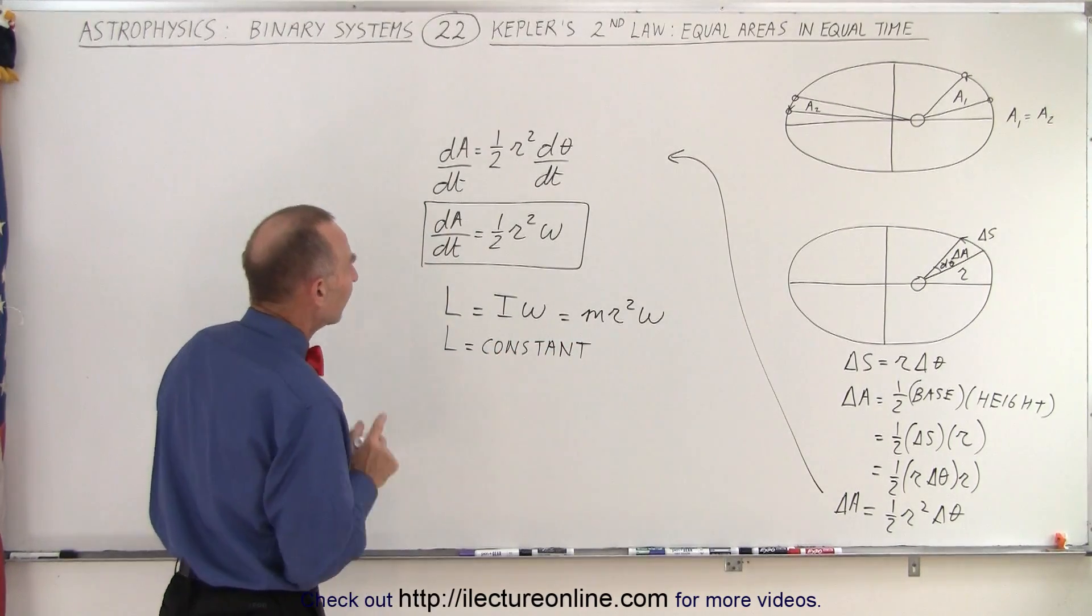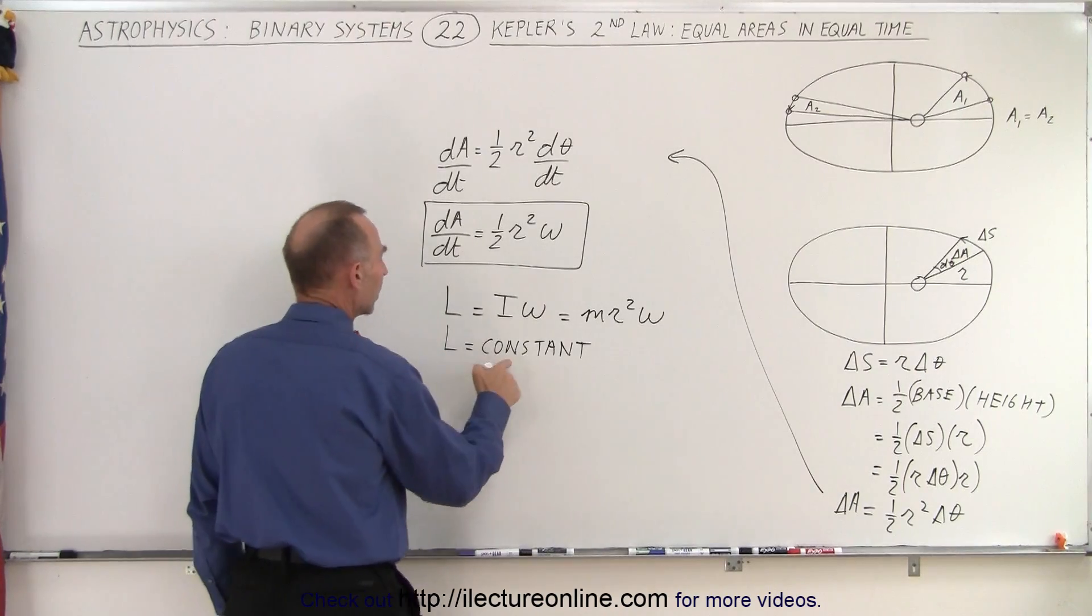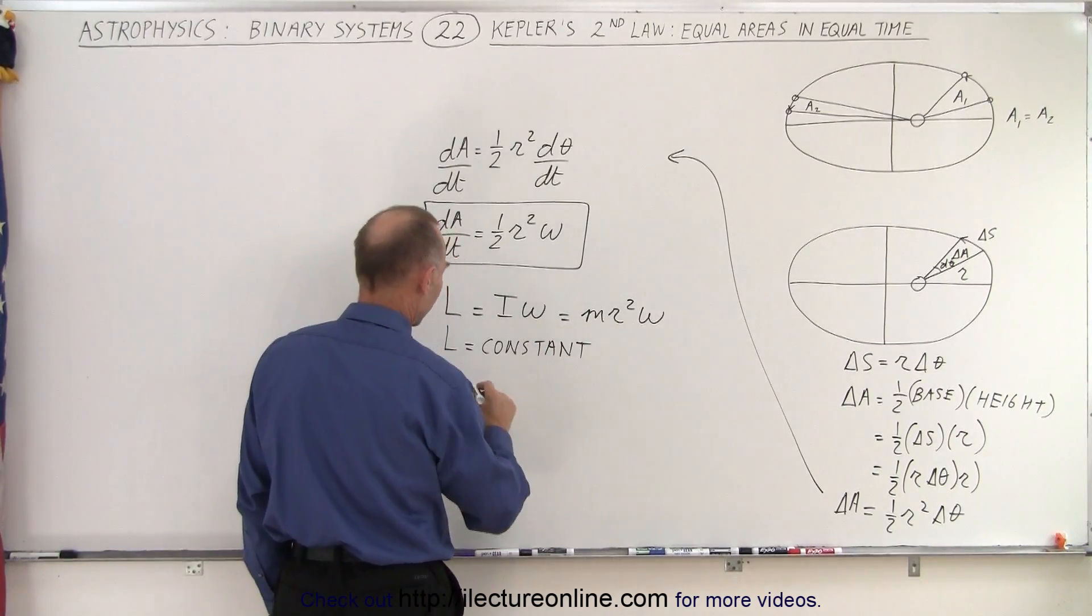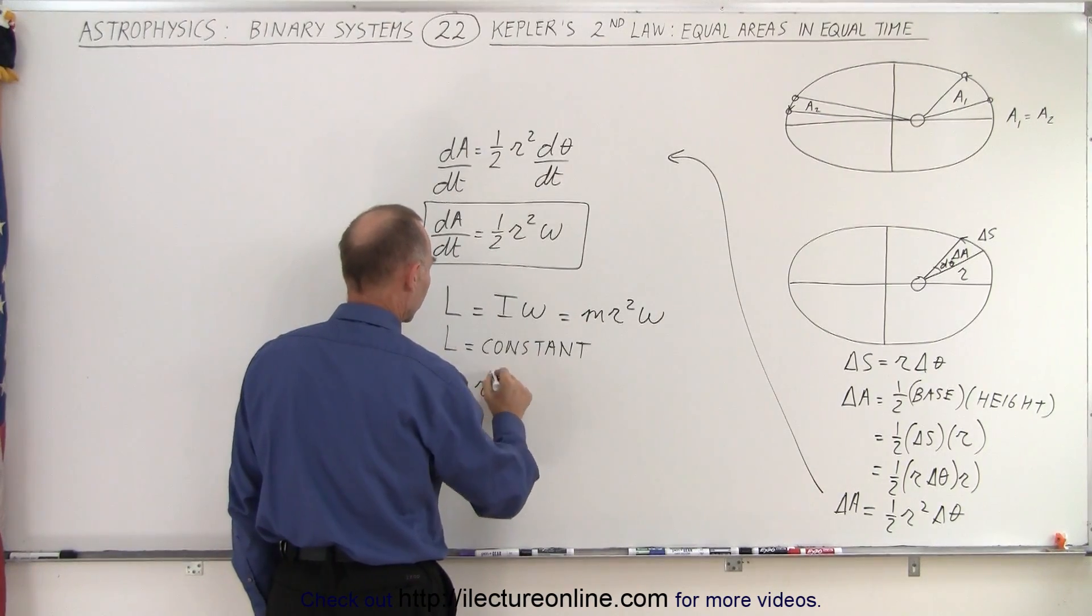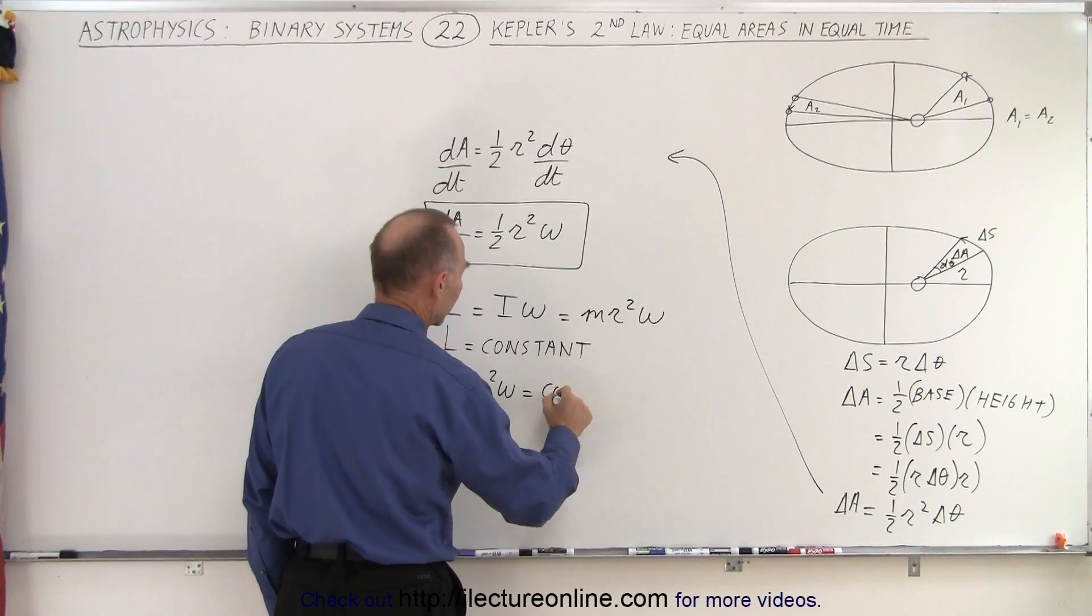All right, so now let's take a look here. We have L being a constant, which means that this is a constant, so in other words, m r squared omega must equal a constant.